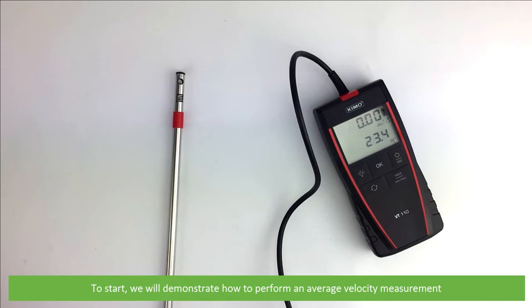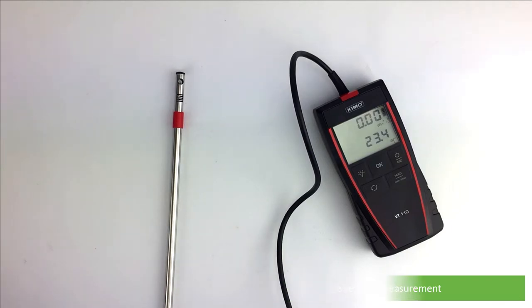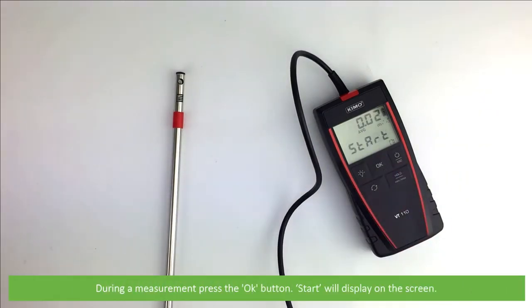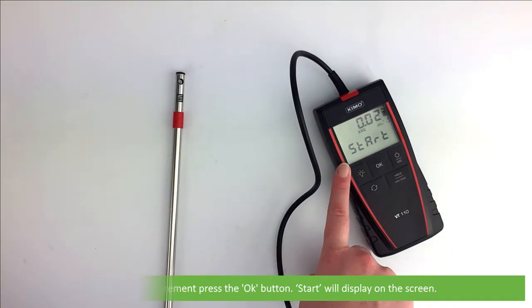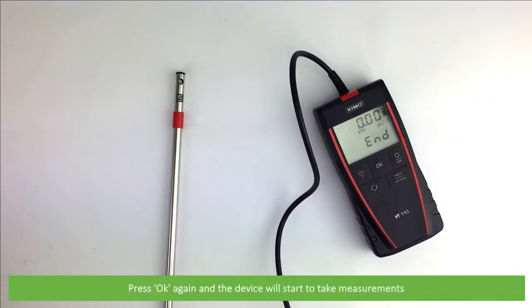To start, we'll demonstrate how to perform an average velocity measurement. During a measurement, press the OK button. Start will display on the screen. Press OK again and the device will start to take measurements.